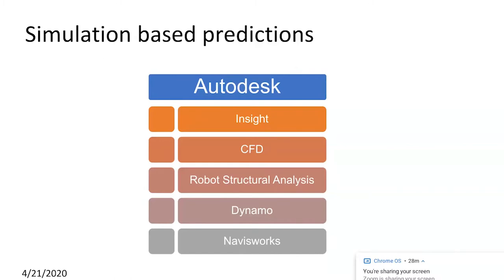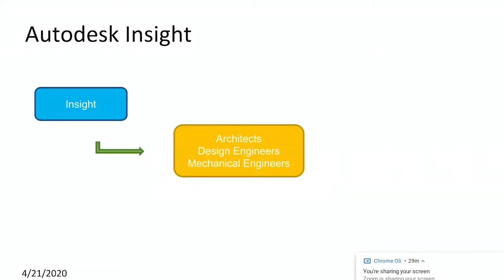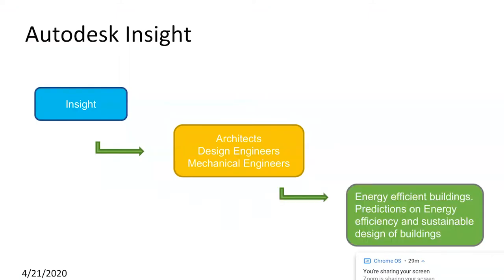These multiple simulation-based prediction analysis tools each serve a different purpose. The first simulation tool is Autodesk Insight, which is most commonly used by architects, design engineers, and mechanical engineers.